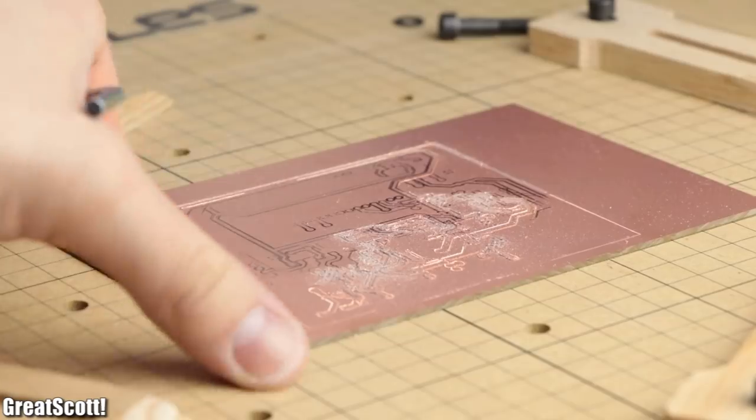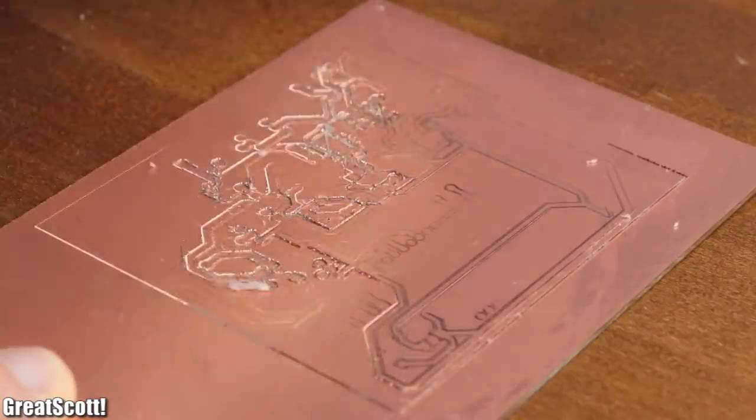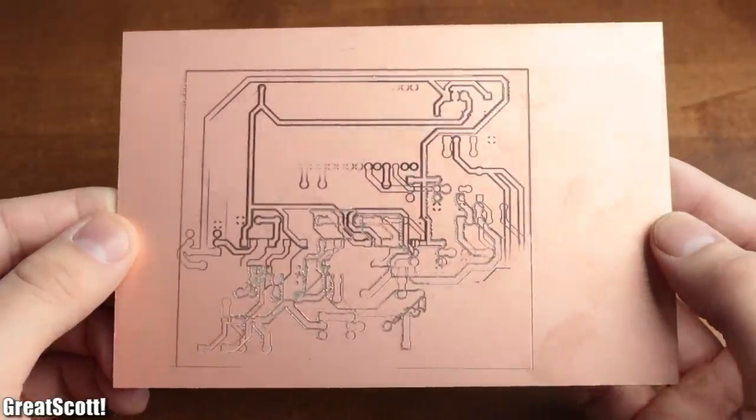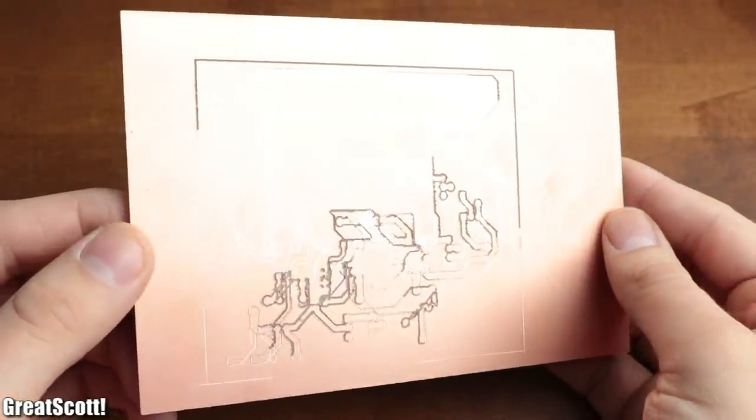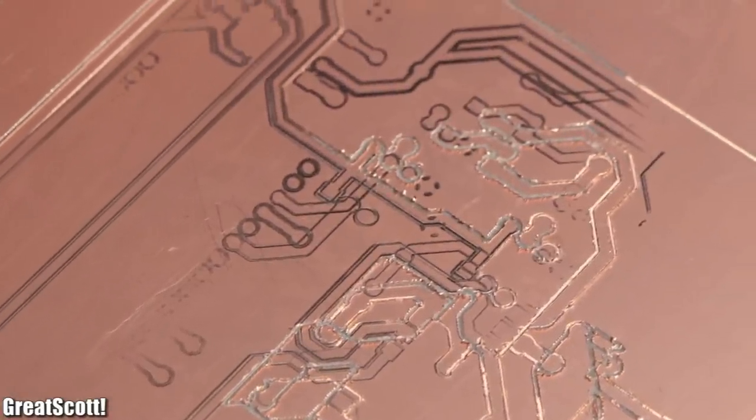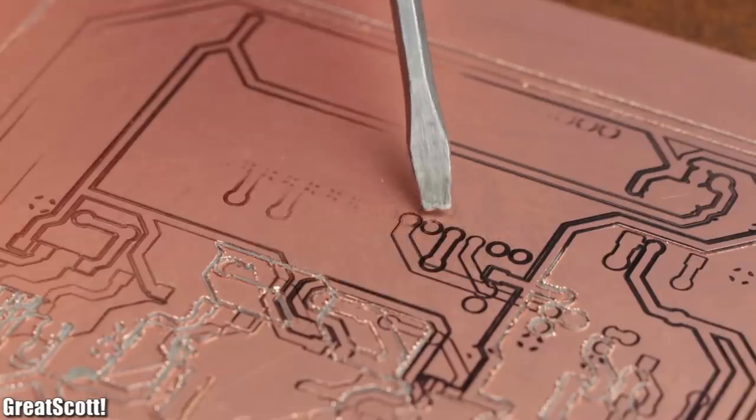So let's free it from its clamp prison, clean it with some isopropanol, and have a look at the results, if we can call it that. Most of the problems with this milling process has to do with the different depths the bit cut through the material.